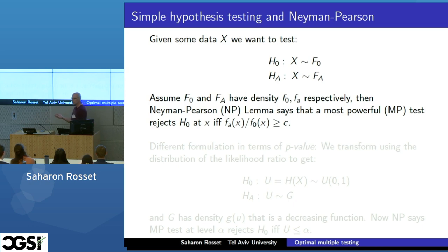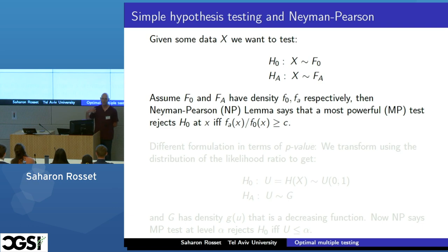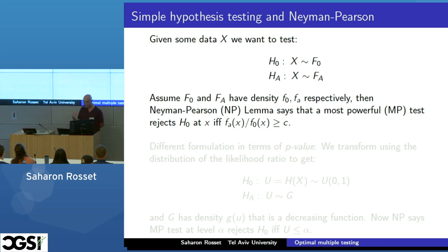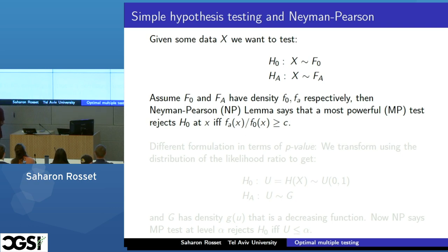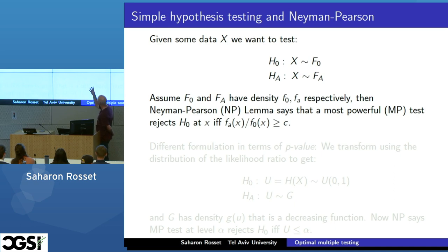The main point is that we care about power. We have to control the level of the test to be honest, but we care about power, so obviously we want our tests to have as much power as possible. Everyone has heard of the Neyman-Pearson lemma — one of the most fundamental results in statistics — which says there is a well-known way to get the most powerful test. The way to get it is to look at the ratio of the density under the alternative to the density under the null, and reject the null hypothesis — declare a discovery — if that ratio is large.